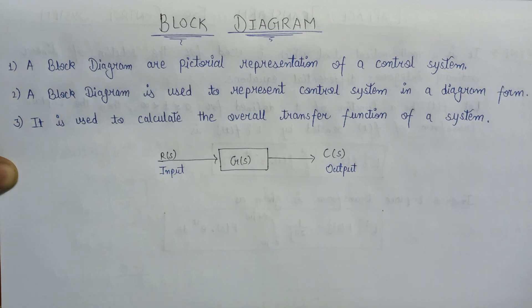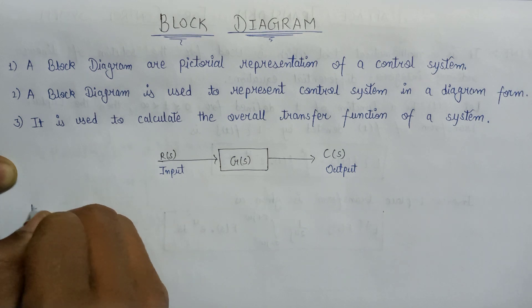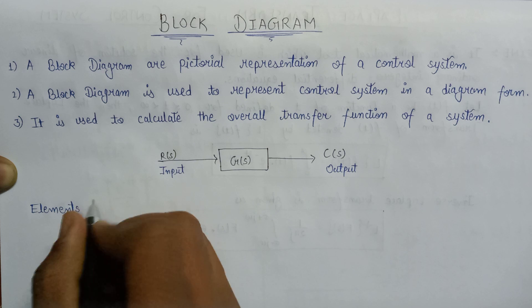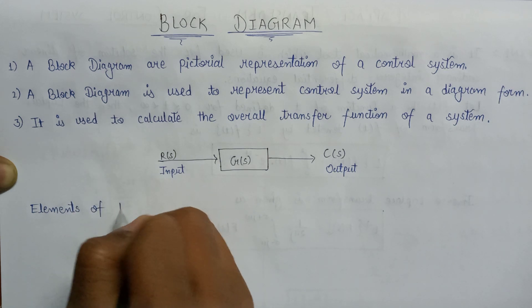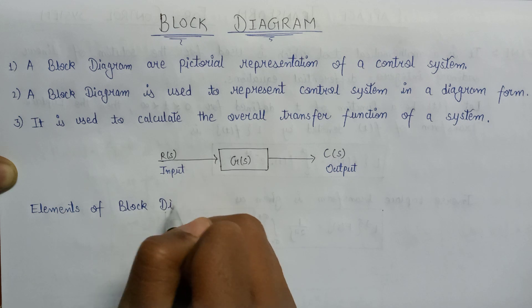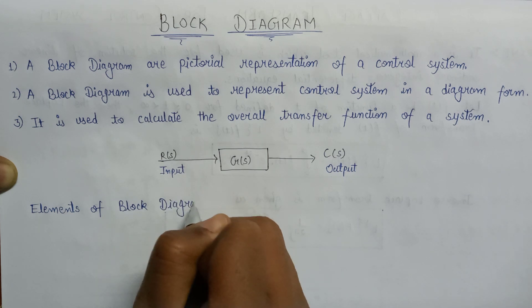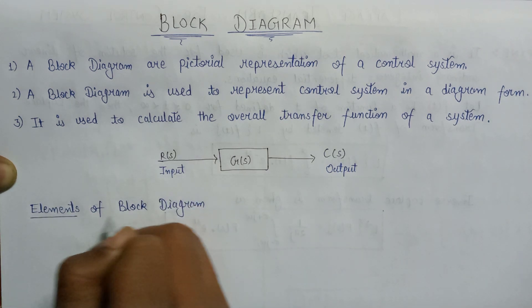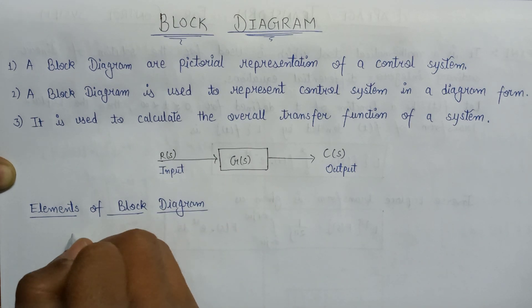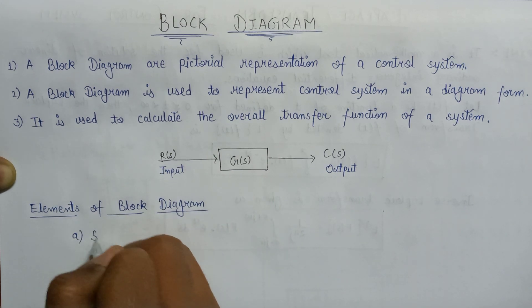Now let us understand the elements of a block diagram. Generally there are two basic elements of a block diagram. The first element is the summing point.